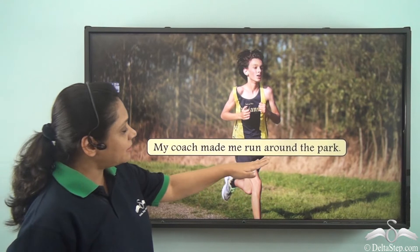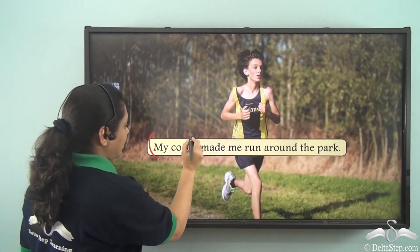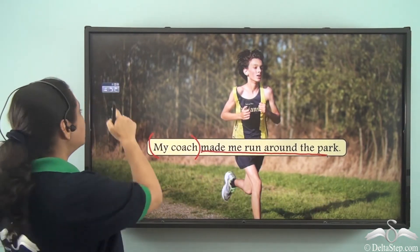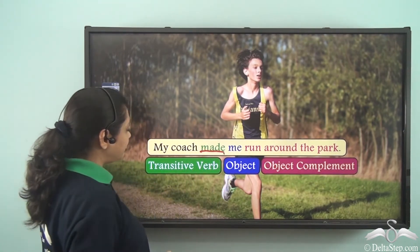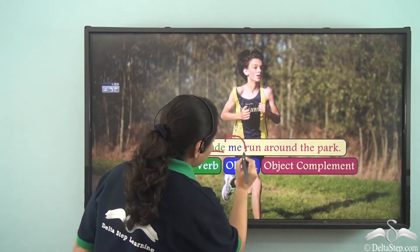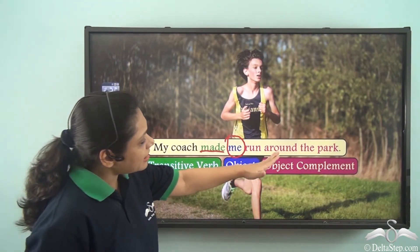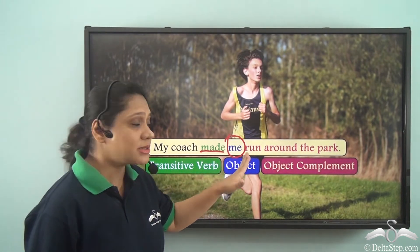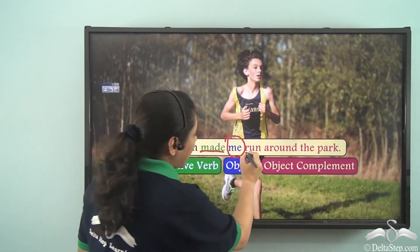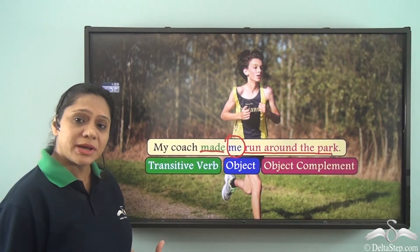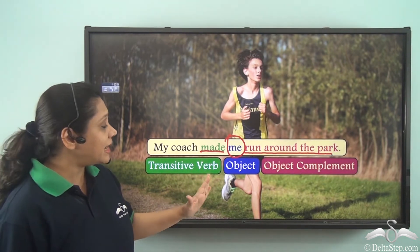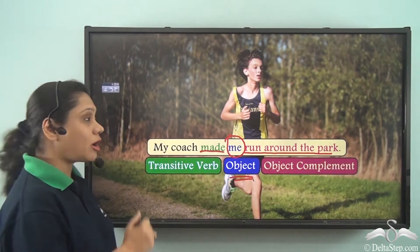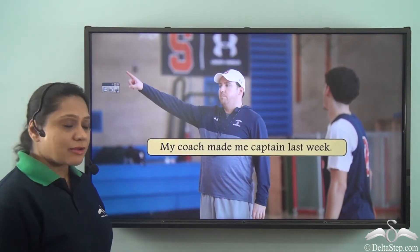Consider: My coach made me run around the park. The subject is 'my coach' and the predicate is 'made me run around the park'. This predicate has the transitive verb 'made' with object 'me'. The phrase 'run around the park' is actually completing the meaning of the predicate — the coach made me run around the park. So 'run around the park' is the complement here. Since it tells us more about the object 'me', it is an object complement.